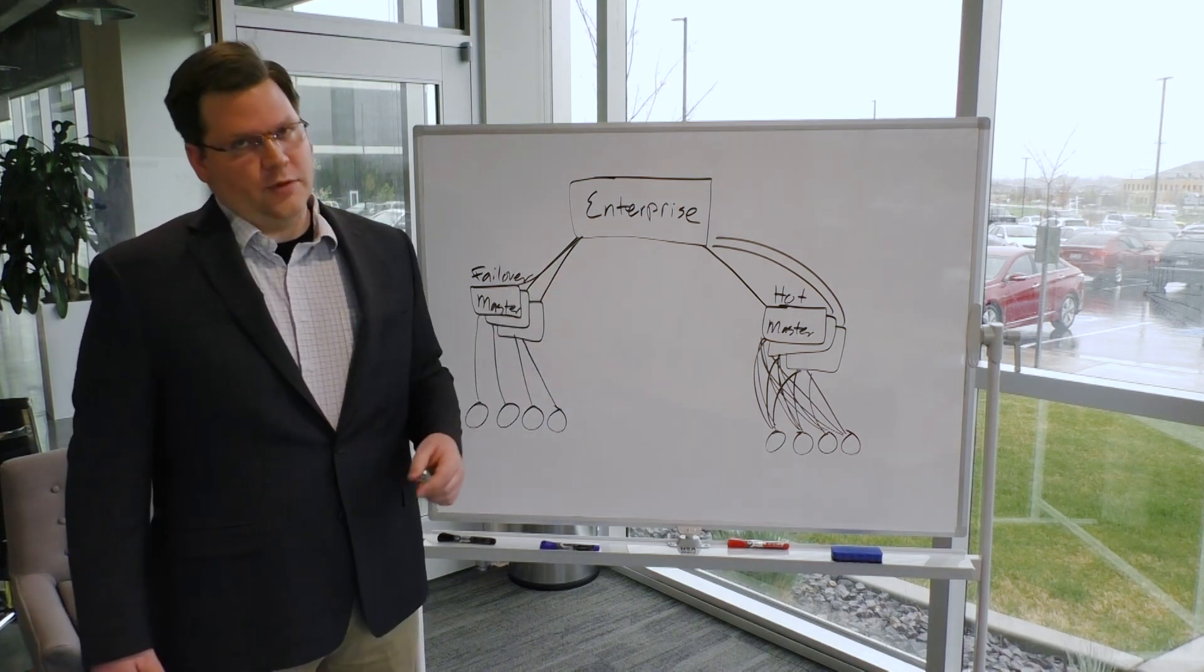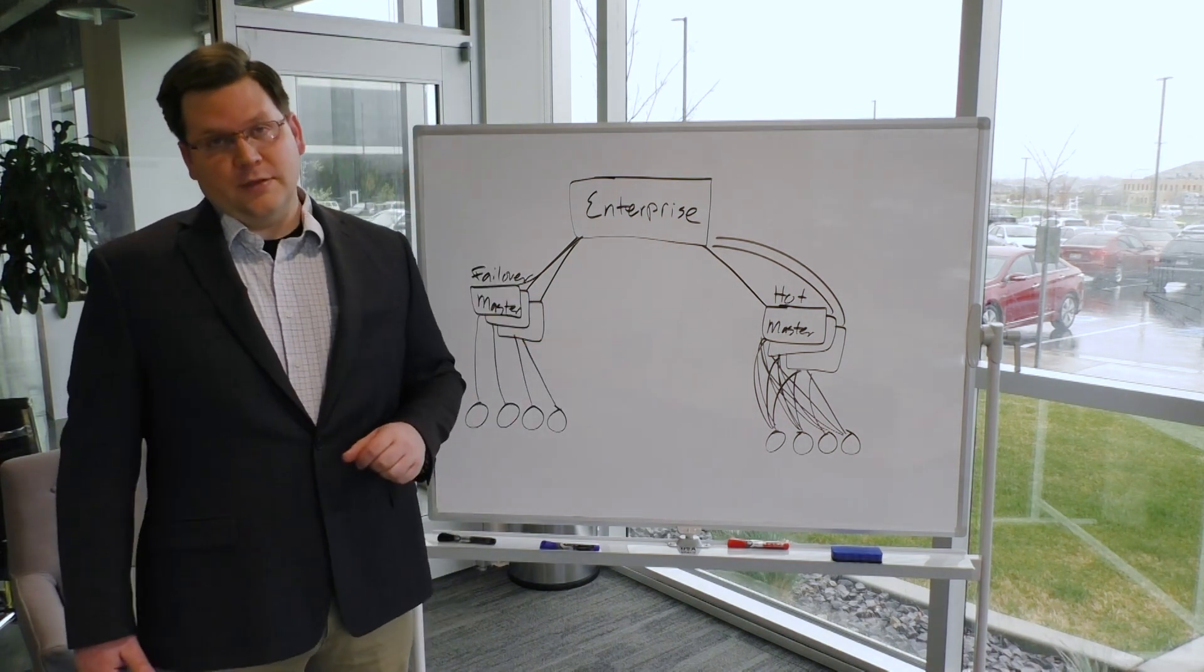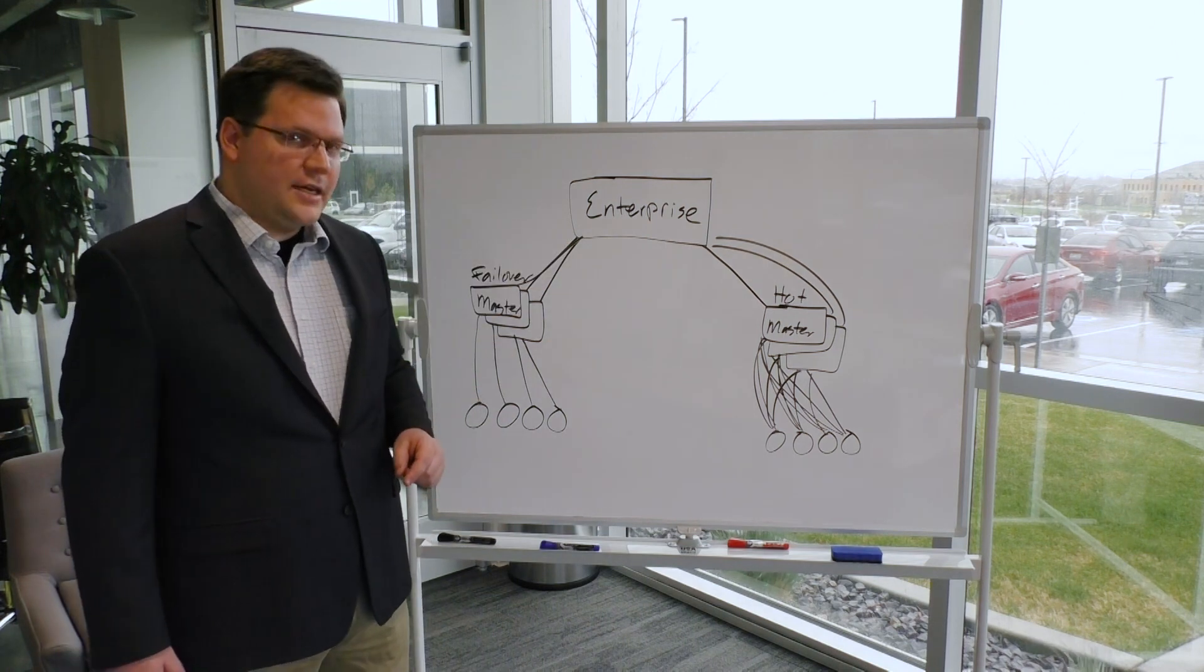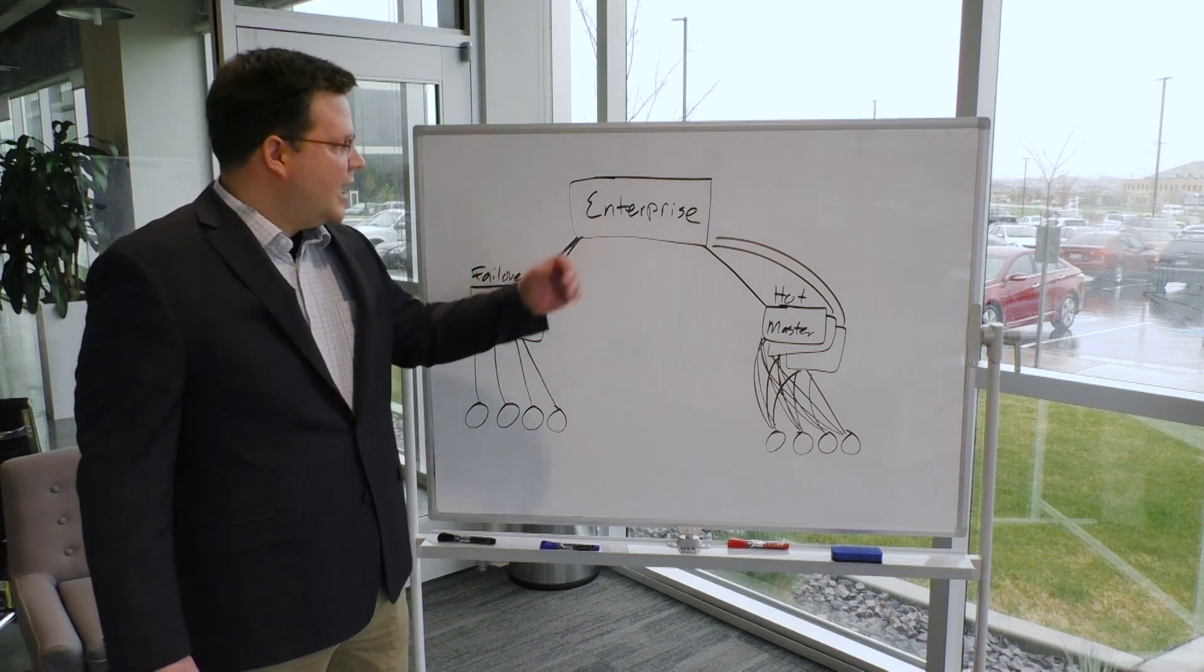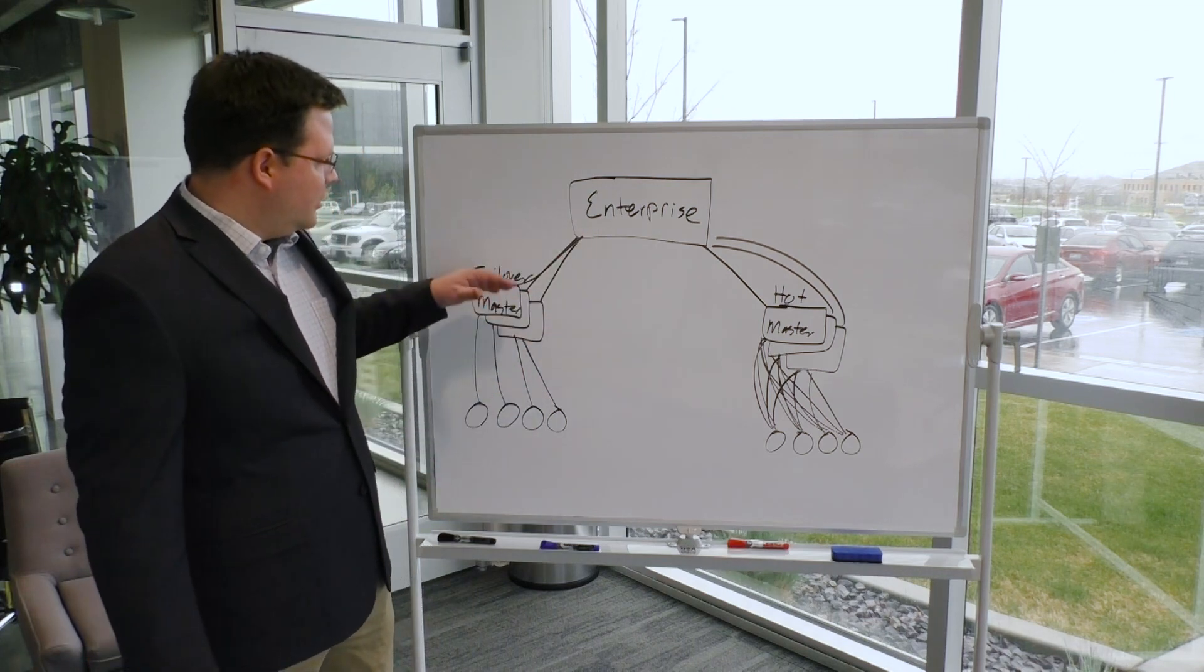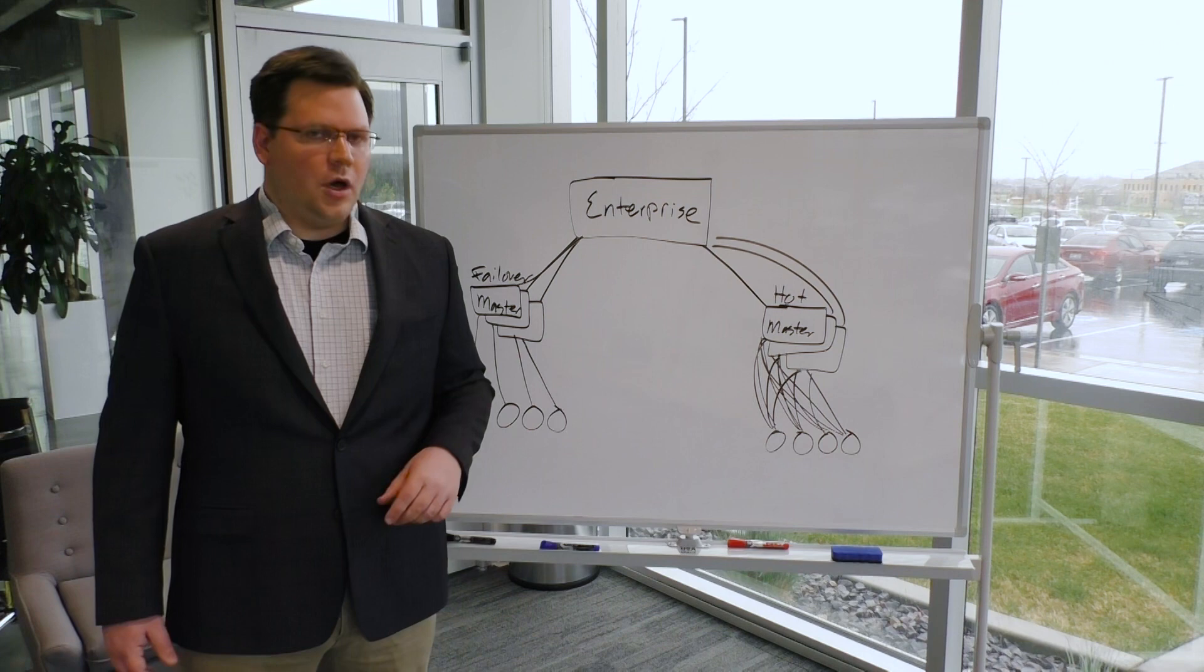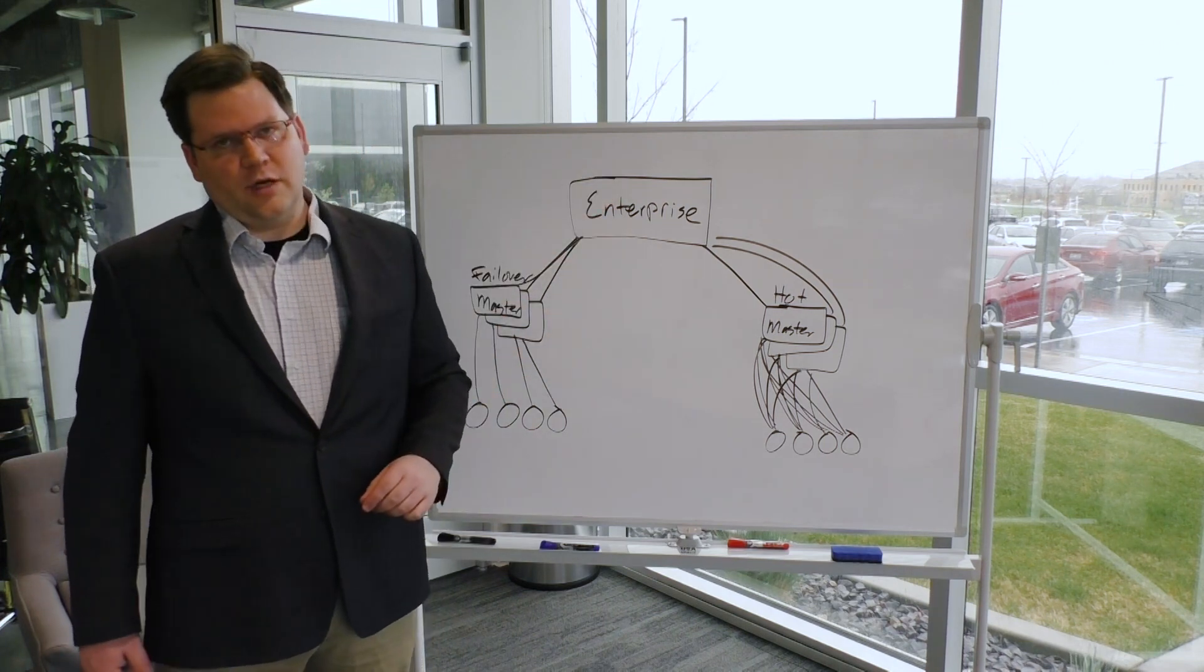Now here's where Enterprise comes in. Because of these different topological arrangements that we provide for high availability, the Enterprise system is able to deal with both of them. If we have a failover master cluster attached to Enterprise, then Enterprise knows when I send a command down, it's going to go to every master in that cluster, and then I'm going to merge all of the information from all of those disparate minions across that cluster inside of the Enterprise tracking database.